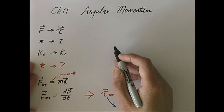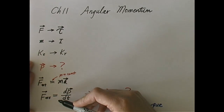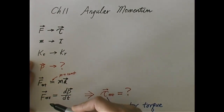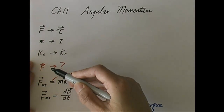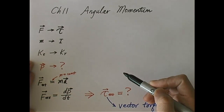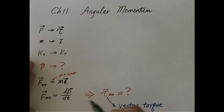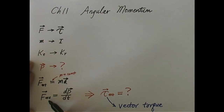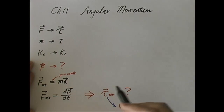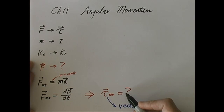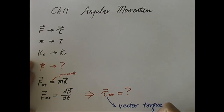If we follow this analogy — replacing force with torque and linear momentum with angular momentum — then we expect the vector torque to do something similar to what the vector force did, which was to change linear momentum. We expect the vector torque to change angular momentum. That would be the total analogy.